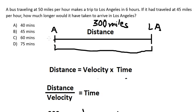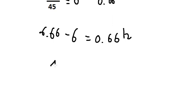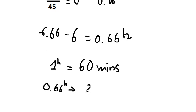It's 0.66 hours, but we need to convert it into minutes. One hour equals 60 minutes. Now we have 0.66 hours to convert into minutes.